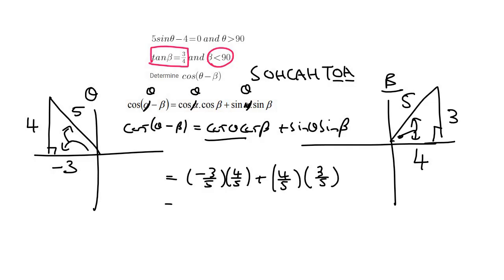What I would then do to pretend like we're not using a calculator is I would use this part separately. So that's minus 12 over 25. And then this part is 12 over 25. And then this actually ends up being 0.